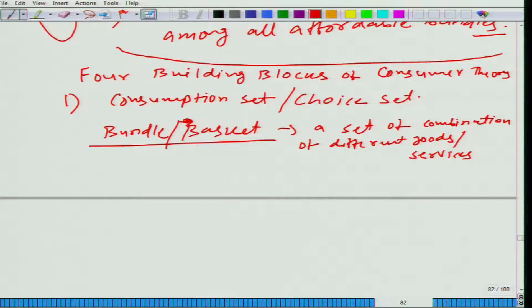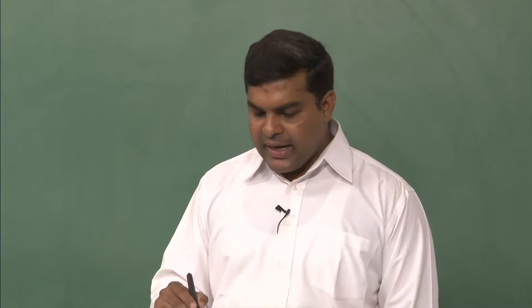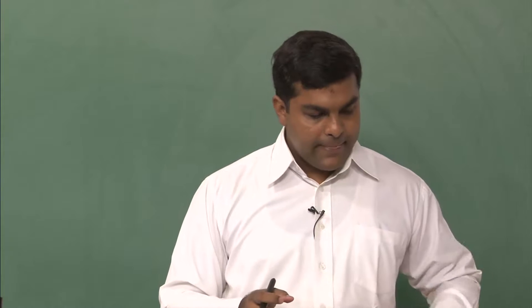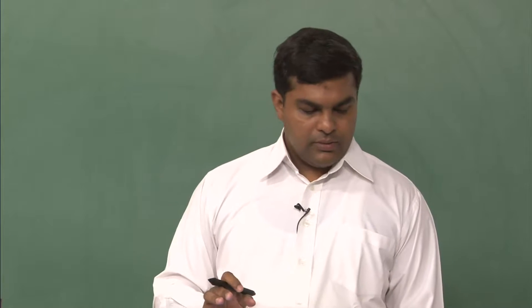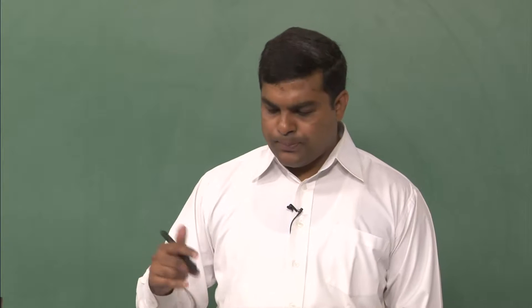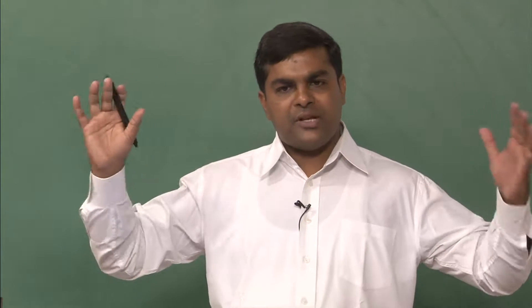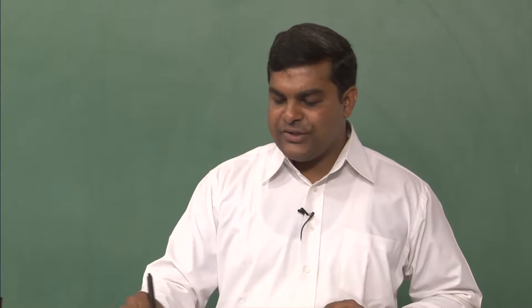What do we mean by consumption set or choice set? It is nothing but all the possible combinations that you can think of. The idea is imagination — whatever you can imagine. At this level, we are not talking about what you can afford or what you can get in the market. We are talking about imagination — whatever you can think of. All such possible bundles are in the consumption set.